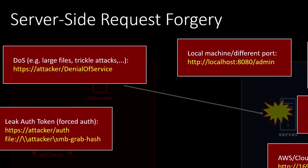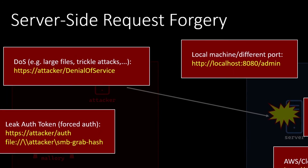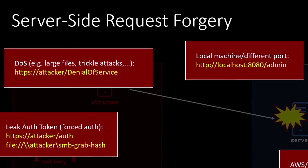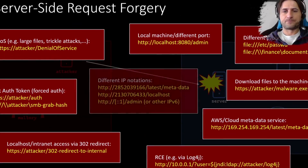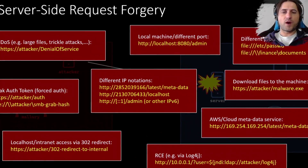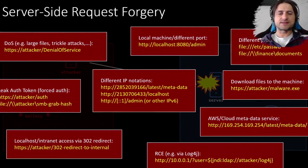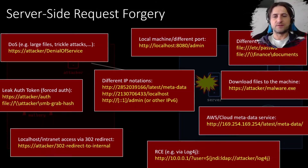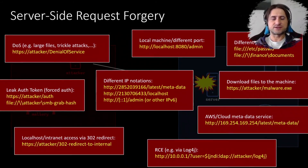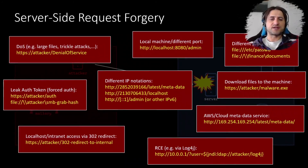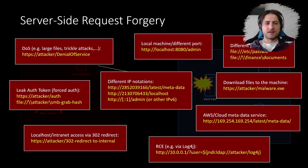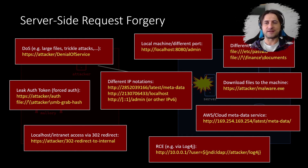Denial of service is another scenario to be aware of — an attacker can perform DoS attacks using server-side request forgery. Also important: IP addresses can be written in different notations. You don't have to use dot notation — you can use integers, octets, or IPv6, which might also be allowed. So common scenarios include port scanning, denial of service, reading documents, and invoking APIs in the internal network. It's a really scary attack avenue.